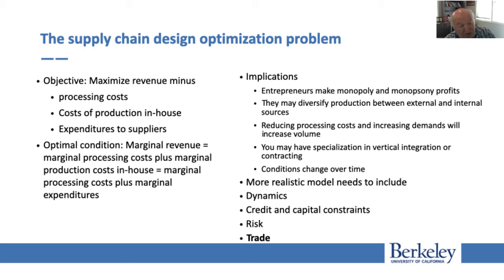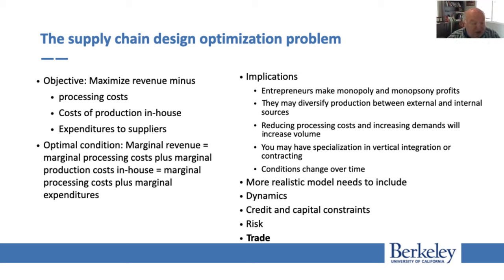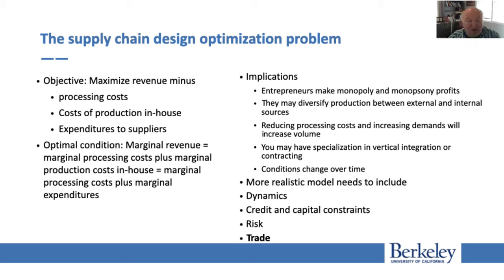A good model must also have the capacity to deal with dynamics and change over time. It has to take into account credit and capital constraints — limitations on how much you can build or borrow from the bank to invest. All these constraints make it more difficult to develop an organization. There is also a constraint associated with risk: when you have risk, you may decide to keep a little reserve or storage, or diversify feedstock production — producing some in-house and buying some from others.